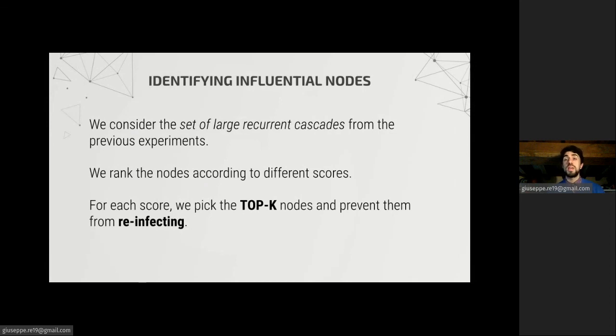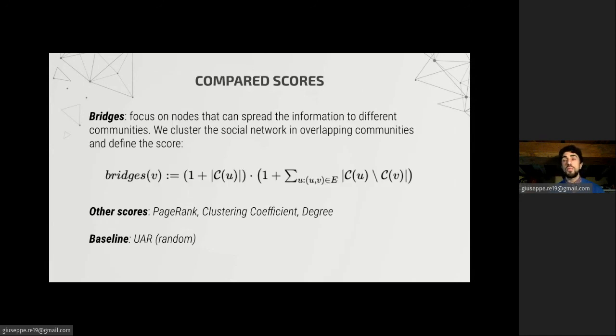So we considered the set of large recurrent cascades generated from the previous simulations. And then, we tried to identify influential nodes. So we tried different scores and we ranked the nodes according to the scores. And then, for each score, we picked the top K nodes and prevent them from reinfecting. And then we run the cascade but without the reinfections given by those nodes.